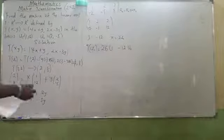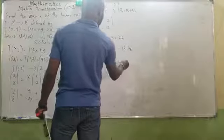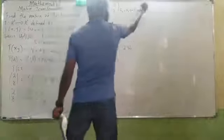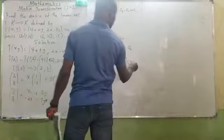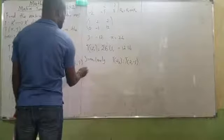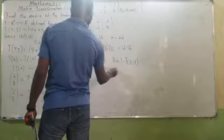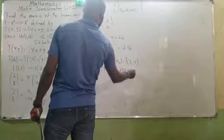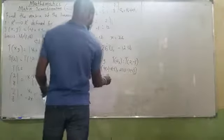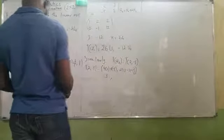Similarly, my T(u2) will be equals to — my u2 is (2, −5). So T(2, −5) will be equals to: 4 bracket of 2 plus (−5), comma, 2 bracket of 2 minus 3 bracket of (−5). This will be 8 − 5 = 3, and 4 + 15 = 19. So T(u2) = (3, 19).